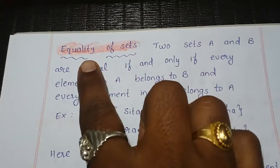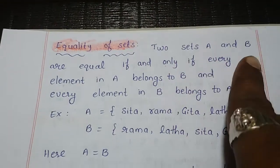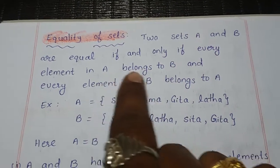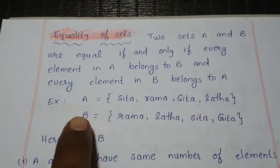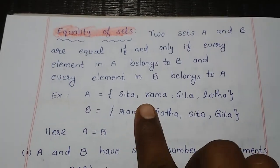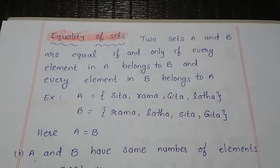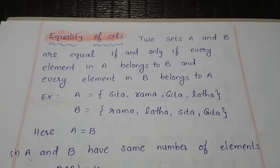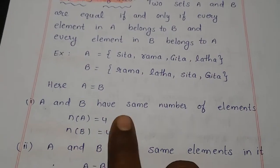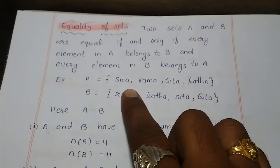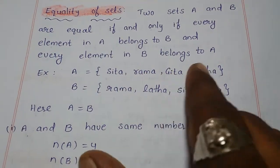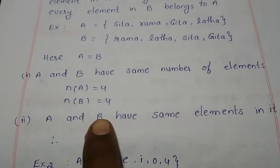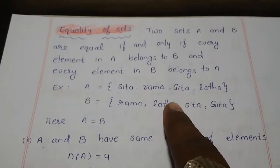Equality of sets: two sets A and B are equal if and only if every element in A belongs to B and every element in B belongs to A. For example, set A = {Sita, Rama, Gita, Lata} and set B = {Rama, Lata, Sita, Gita}. Here A is equal to B. Both sets have the same number of elements — four elements each — and the same elements, therefore A is equal to B.